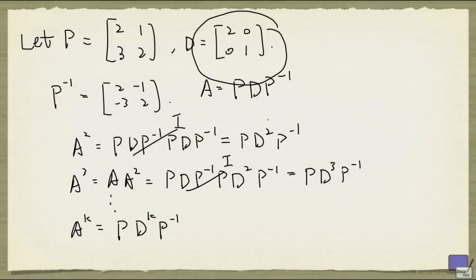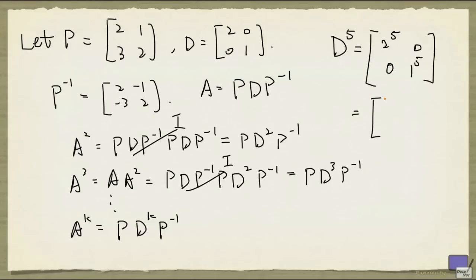D is a diagonal matrix. When you take power of a diagonal matrix, you simply take the powers of the diagonal entries. So for example, if I want to look at what D to the fifth power is, I just take the diagonal entries to the fifth power. And that will give us 32, 0, 0, 1.